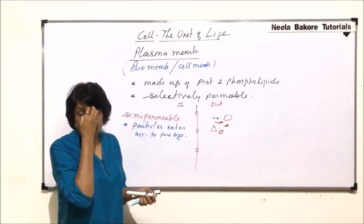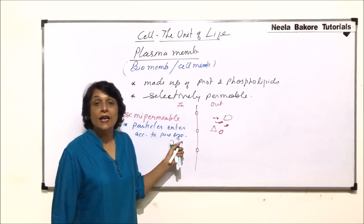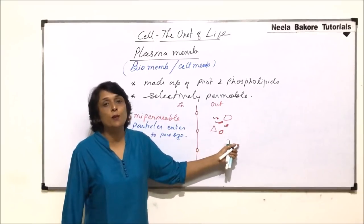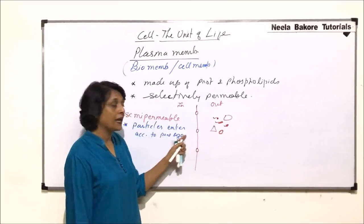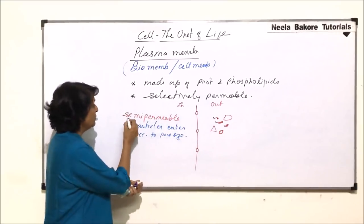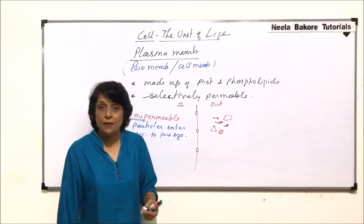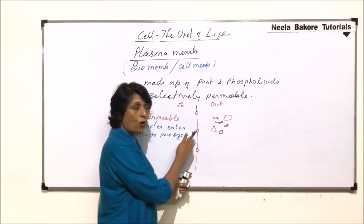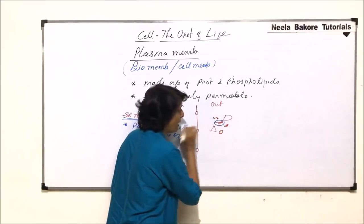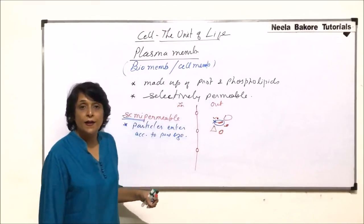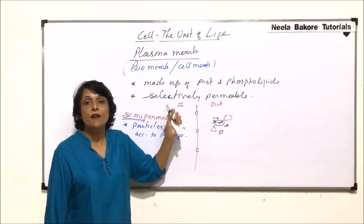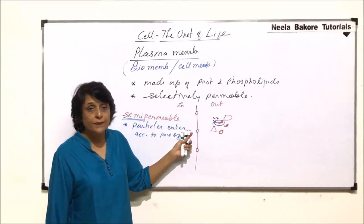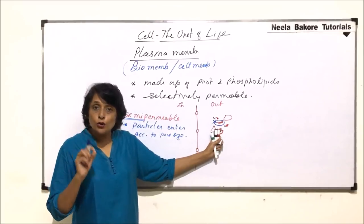If a particle can cross this pore then it will go in — and this particle could be a good particle, a required particle, or could be a harmful substance. But if it can cross the pore it will go in; in that case we call the membrane semi-permeable. When would we call this membrane selectively permeable? According to pore size all three can go in, but say for example this particle is not required — then a selectively permeable membrane will not let this particle go in.